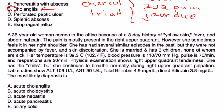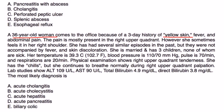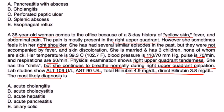Next question. A 36-year-old woman comes to the office because of a three-day history of yellow skin, fever, and abdominal pain. Pain is most present in the right upper quadrant. However, she sometimes feels it in the right shoulder. She has had several similar episodes in the past, but they were not accompanied by fever and skin discoloration. She is married and has three kids, none of which are sick. Temperature is 39.3 Celsius. Blood pressure is 110. Pulse is 70. Respirations are 20. Physical exam shows right upper quadrant tenderness. She has the chills. She continues to breathe normally during right upper quadrant palpation. Lab studies show ALT is high, AST is high, and so are the bilirubin values. Most likely diagnosis is - well, again, she's got fever, she's got right upper quadrant pain, and she definitely has all the lab values consistent with jaundice. Charcot's triad, that points to cholangitis. But I just wanted to mention one quick thing here.